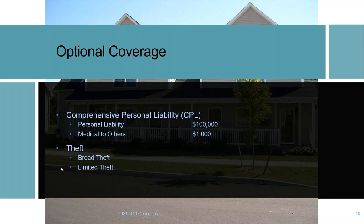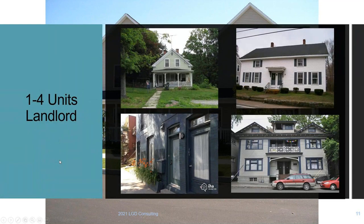If you have a four-plex and don't live there, you only need limited theft — the only items there would be appliances, and a lot of landlords just self-insure those. So remember: for a landlord, dwelling covers single family homes, duplexes, three-plexes, or four-plexes — one to four living units. If larger than four units, go to a Business Owner Policy (up to six stories, 100,000 sq ft); if larger than that, go to a commercial package policy.